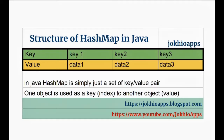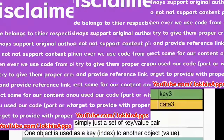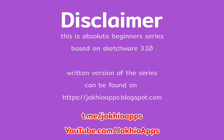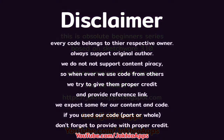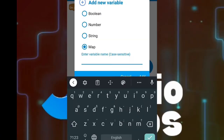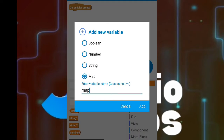The map is just a simple set of key and value pairs. In previous videos we have learned about boolean, string, and number variables in Sketchware. Today we are going to learn about the map variable in Sketchware.